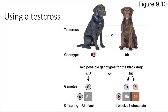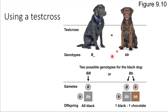In order to figure out what that missing allele is, we can do a test cross. In a test cross, we cross this dog with another dog who is homozygous recessive — so a brown dog with two lowercase b alleles. Based on the outcome, there are two possibilities. If this black dog is homozygous dominant with two uppercase alleles, then all of the offspring of the cross will be black, because all offspring would be heterozygous.